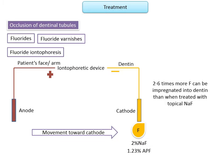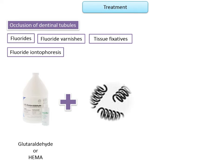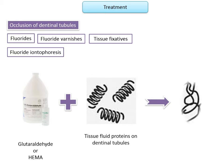Tissue fixatives: desensitizing products containing agents such as glutaraldehyde or HEMA bind to tissue fluid proteins in the dentinal tubules and the superficial cells of the pulp, denaturing or coagulating these proteins. These products cannot be placed near the gingival epithelium since they may cause necrosis of the gingiva and loss of biological attachment.